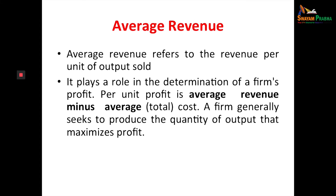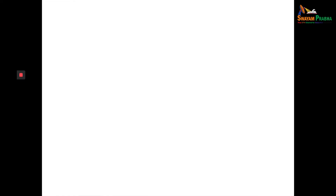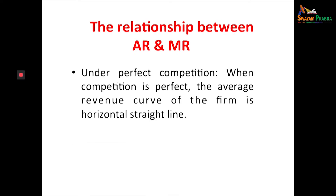The firm generally seeks to produce the quantity of output that maximizes profit. Average revenue is equal to price per unit, which is also equal to total revenue divided by quantity. We will now discuss the relationship between average revenue and marginal revenue.